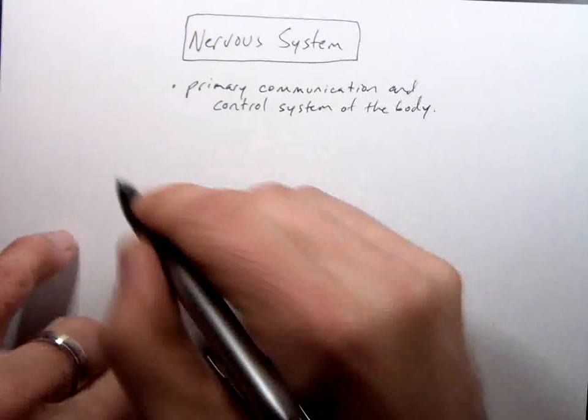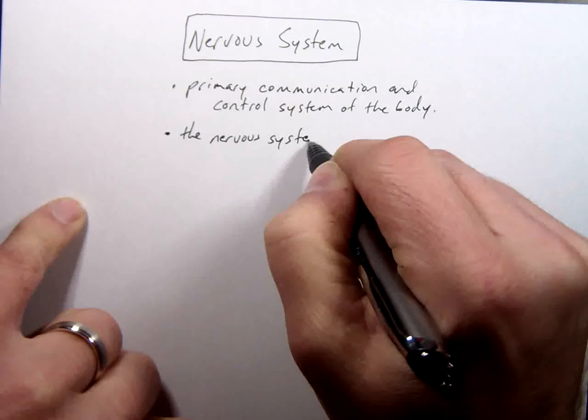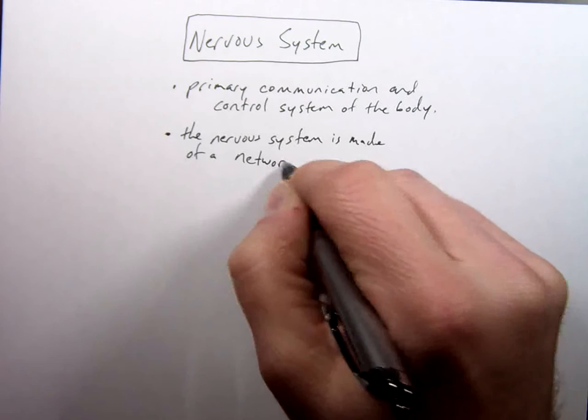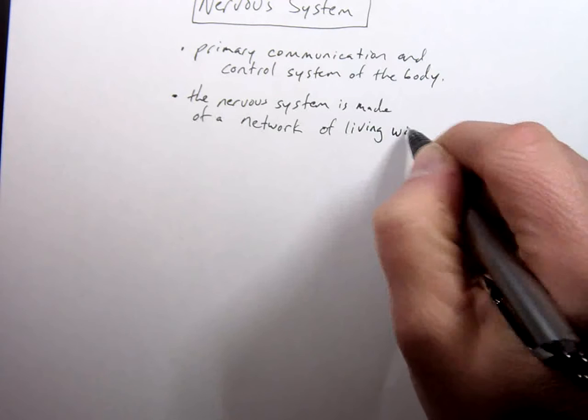And so here's how it works. The nervous system is made of a network of, and this is my favorite words to write in this whole lecture, living wires. Living wires.